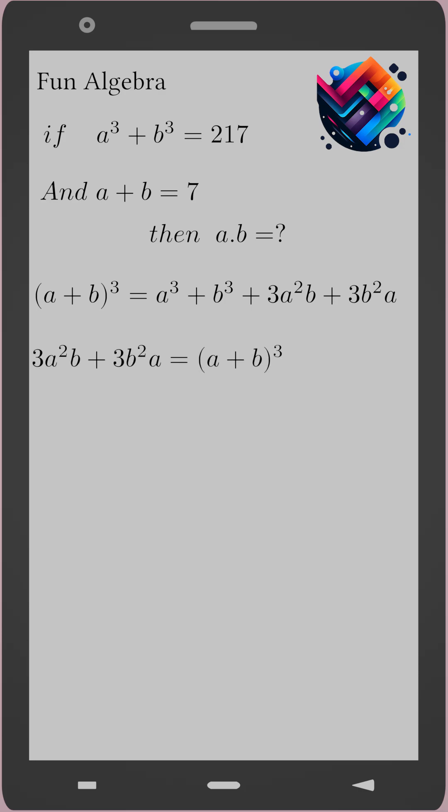So 3a²b + 3ab² = (a + b)³ - (a³ + b³). We factor out 3ab times (a + b).